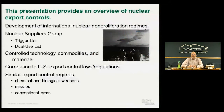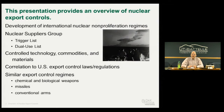I'll first go over the development of international nuclear non-proliferation regimes, the main one being the Nuclear Suppliers Group. I'll be talking about both the trigger list and the dual-use list, and give a few examples of some of the control technologies, commodities, and materials listed on those. I'll also show how those lists correlate into United States statutes and regulations about exports, and briefly cover similar export control regimes aimed at chemical and biological weapons, missiles, and conventional arms.